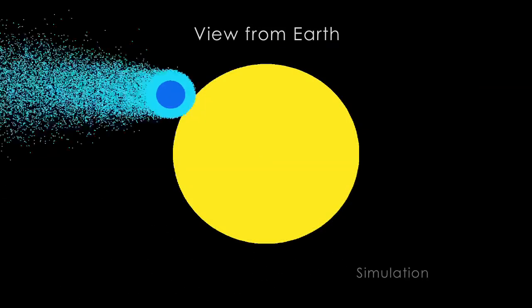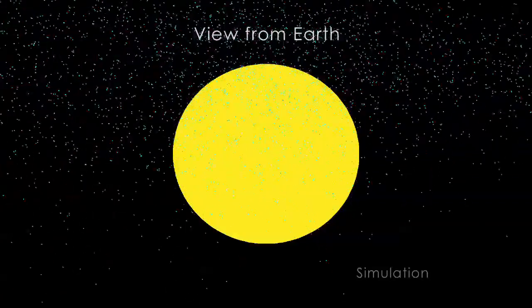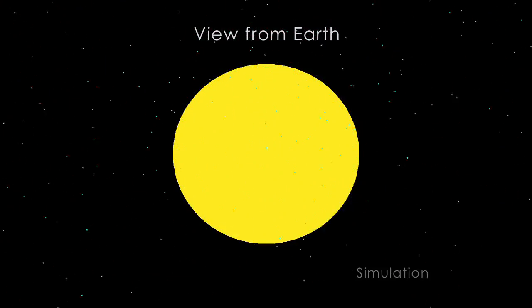Since the planet passes in front of its star as we see it from Earth, astronomers were able to use the Hubble Space Telescope to establish that the atmosphere was evaporating.